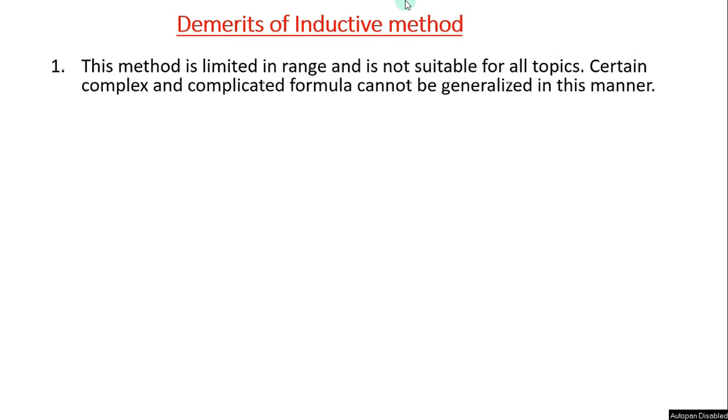Taking the example, the teacher should ask the student what do you observe here, what do you observe in the second example. That increases the interaction in the classroom, that is pupil-teacher contact. It does not burden the mind. Formula becomes easy to remember, no burden. They are involved in finding the formula so it becomes very easy to remember. It discourages cramming and reduces homework. These are the merits. Now let's see some demerits. Every method has both merits and demerits. Now what are the demerits of this inductive method? This method is limited in range and is not suitable for all topics. Certain complex and complicated formulae cannot be generalized in this manner.